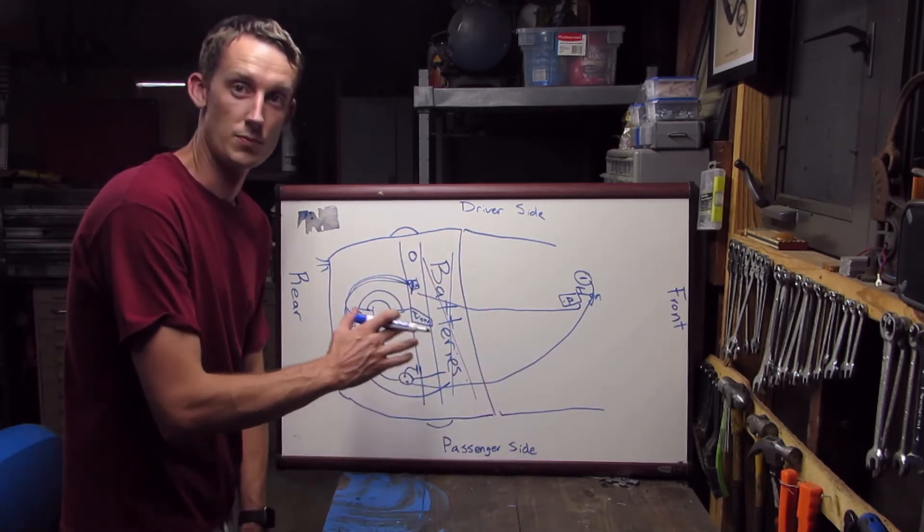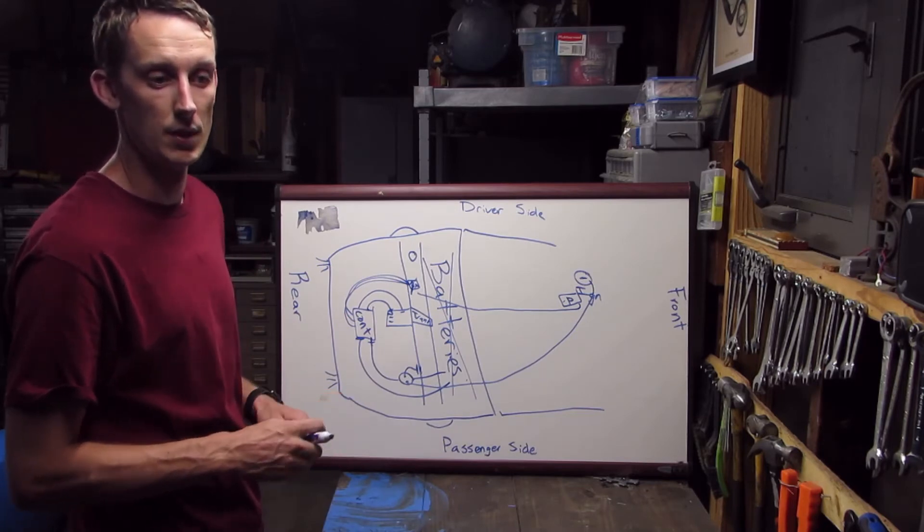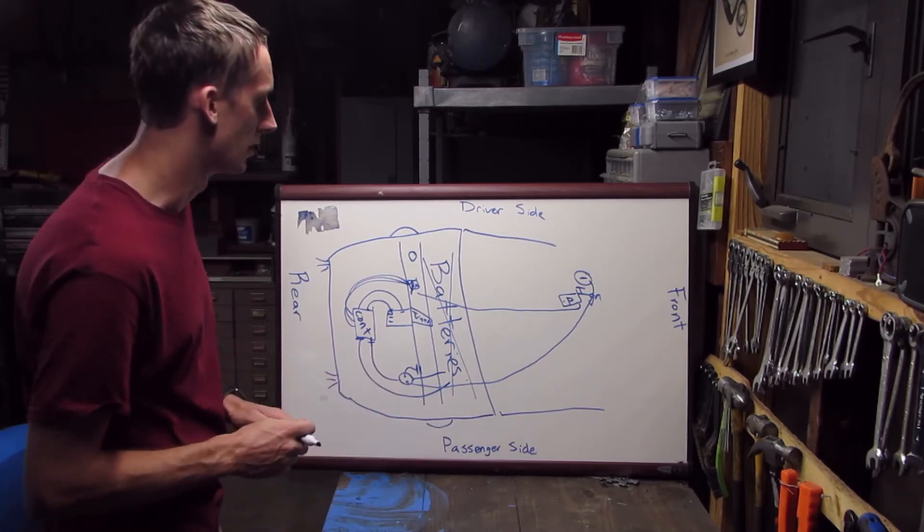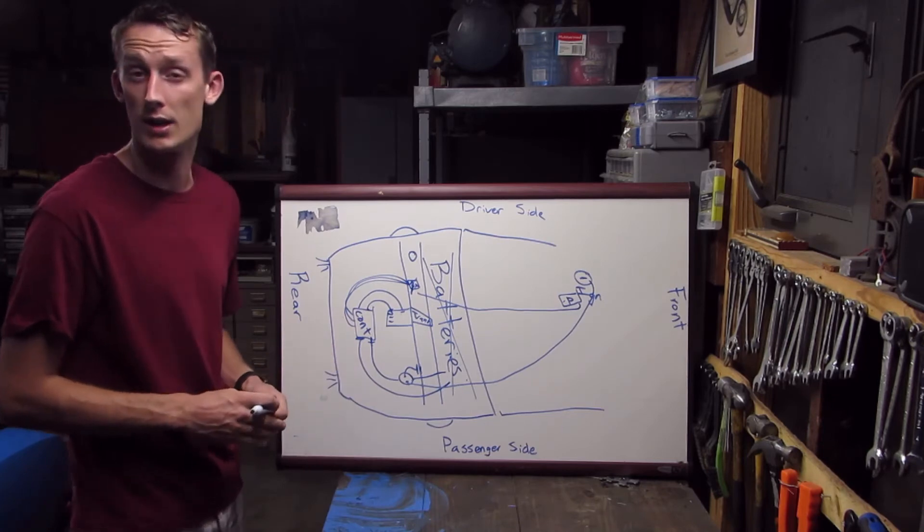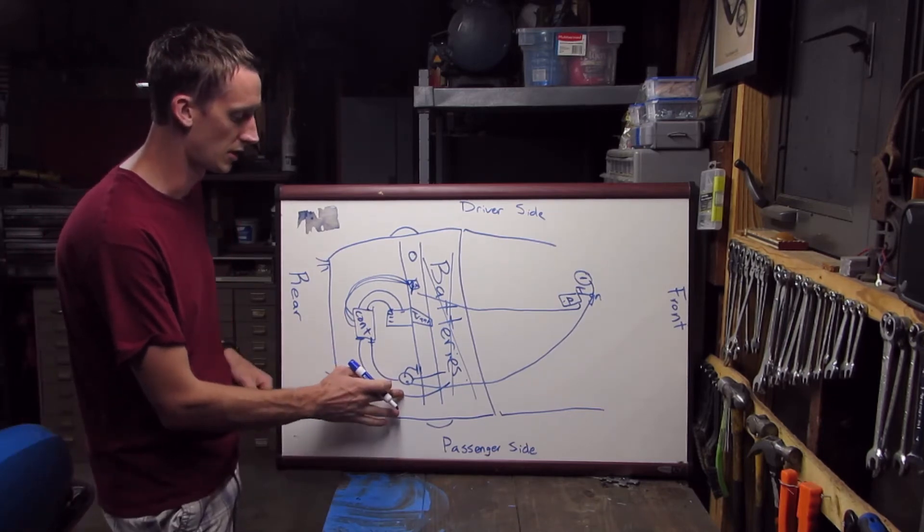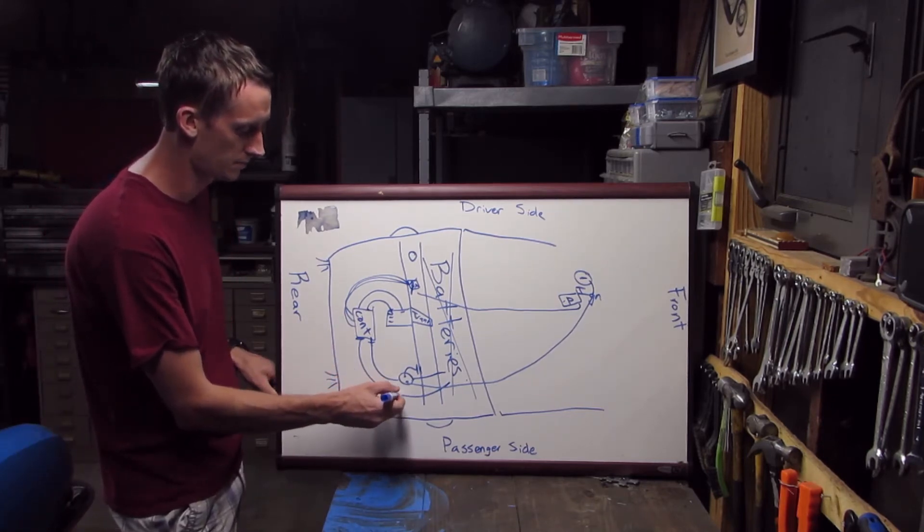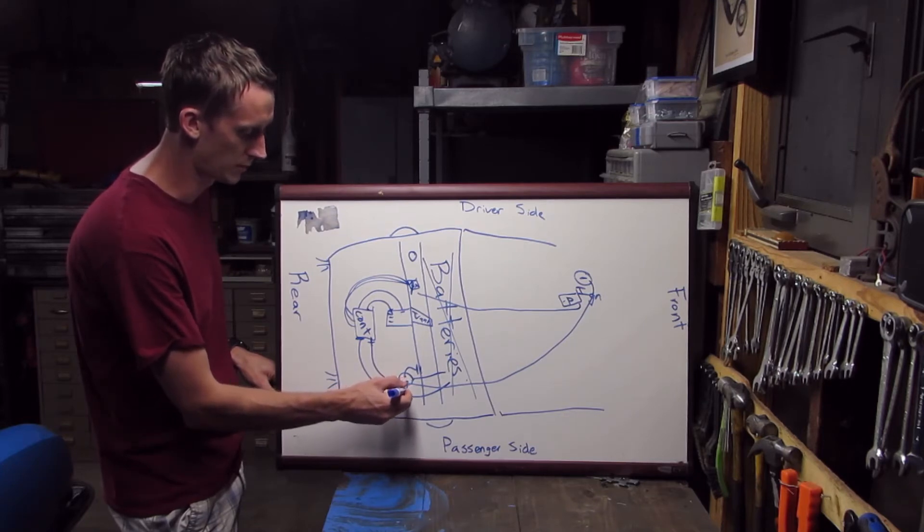This is a basic setup of how to make that work. There's more pieces to this if you want to make it more intricate with more safety features, which I would highly recommend. You can even do a contactor on the negative side, so you just chain them together. That'd be a good way to be extra safe.